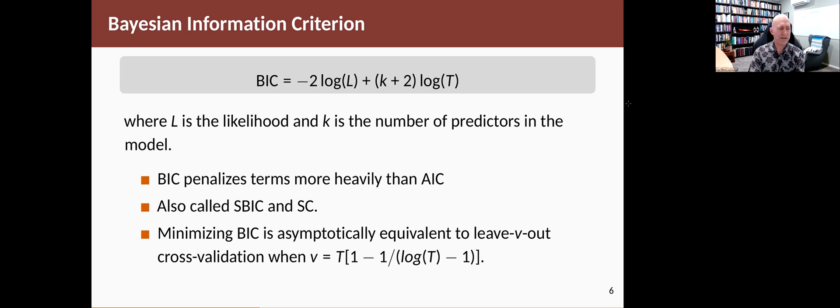And it turns out that minimizing BIC is asymptotically equivalent to another type of cross-validation, where you leave a certain number of observations out. The BIC tends to be popular in econometrics in particular, because if you minimize the BIC, then asymptotically it will lead you to the correct model, assuming there is a correct model. That's not so interesting in forecasting, because we don't believe the data comes from a correct model. All we want to do is predict it accurately. So the AICc is a much better measure for forecast accuracy than the BIC.